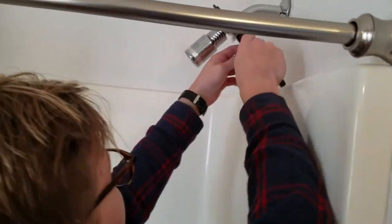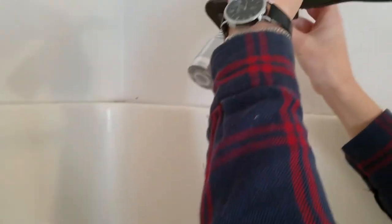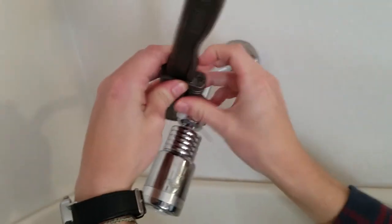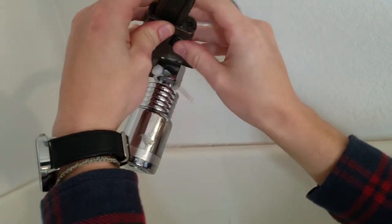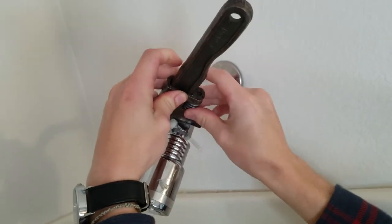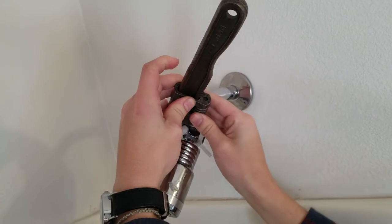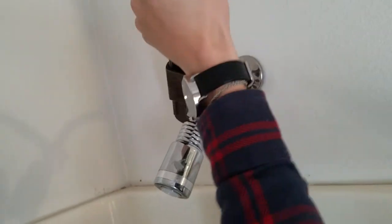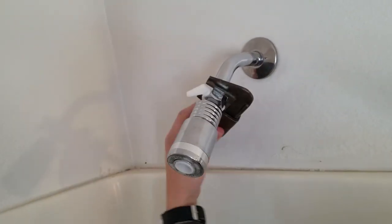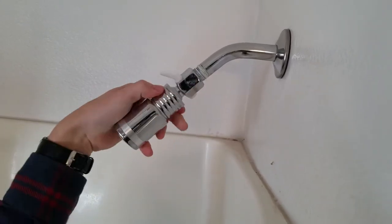First thing you do is fit a pipe wrench onto the existing shower head. This is a wrench that my dad gave me, an antique wrench, but it still works. Then turn counterclockwise. That's pretty simple.